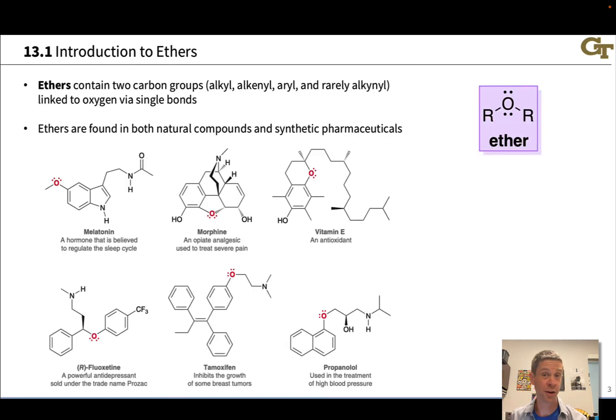So first off, let's touch on what an ether is. An ether contains an oxygen atom linked to two carbon groups, and these might be alkyl, alkenyl, aryl, or even alkynyl groups. And those groups are linked via single bonds to a central oxygen atom. So a general structure for an ether looks like this. Now because of this structural pattern with two O-C bonds, single bonds, we have a dipole moment in the general direction of the oxygen. So ethers in general have a dipole.